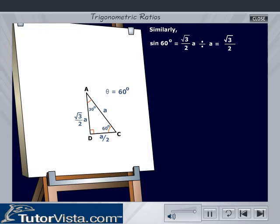Similarly, sin 60° is equal to root 3 by 2 into A divided by A, that is equal to root 3 by 2. Cos 60° is equal to A by 2 divided by A, is equal to half.